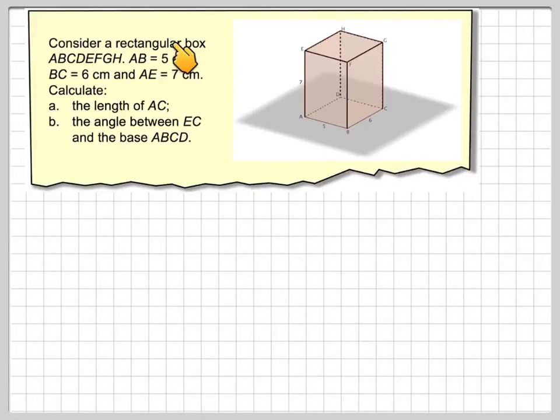Consider a rectangular box ABCDEFGH. AB is 5 cm, BC is 6 cm, and AE is 7 cm. Calculate the length of AC, so we need the length from A to C, and calculate the angle between EC, that line there, and the base.